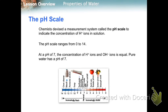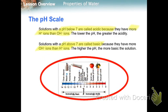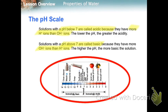The pH scale ranges from 0 to 14. At a pH of 7, the concentration of hydrogen and hydroxide ions is equal — pure water is right there at a pH of 7. Solutions with a pH below 7 are called acidic because they have more hydrogen than hydroxide ions; the lower the pH, the greater the acid. pH above 7 are called basic because they have more hydroxide ions than hydrogen ions; the higher the pH, the more basic the solution. Common household products are shown as examples of acids and bases.